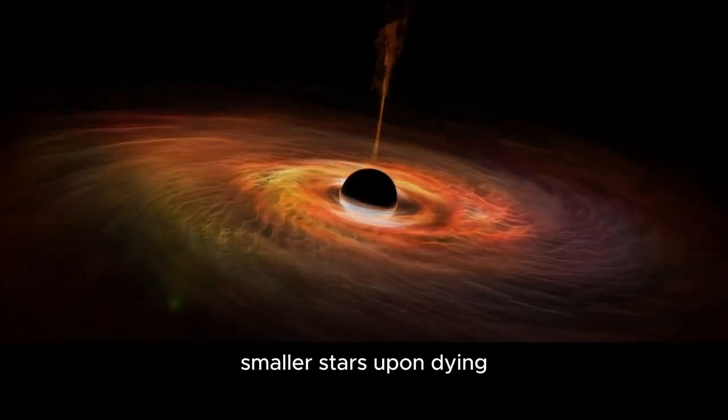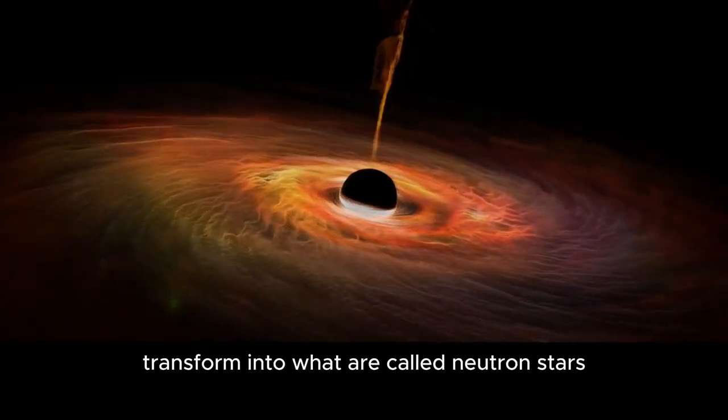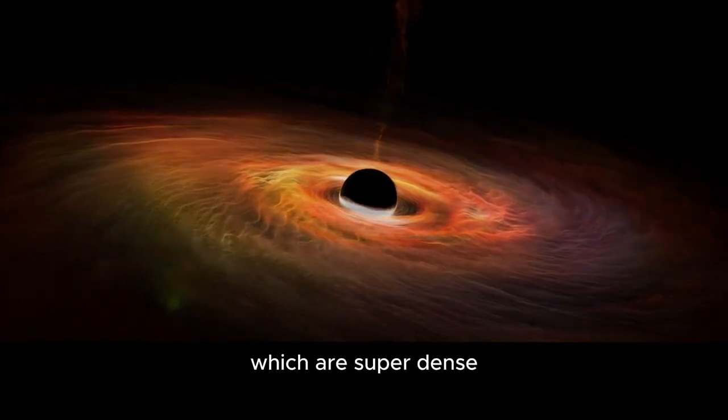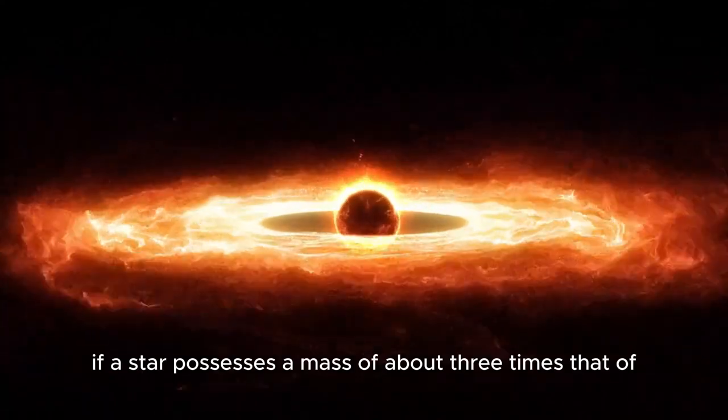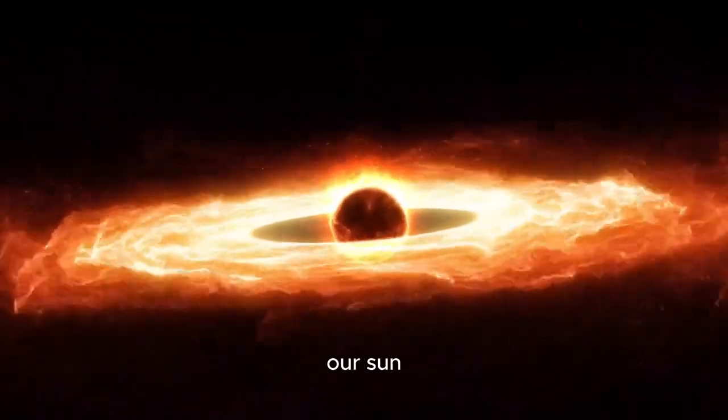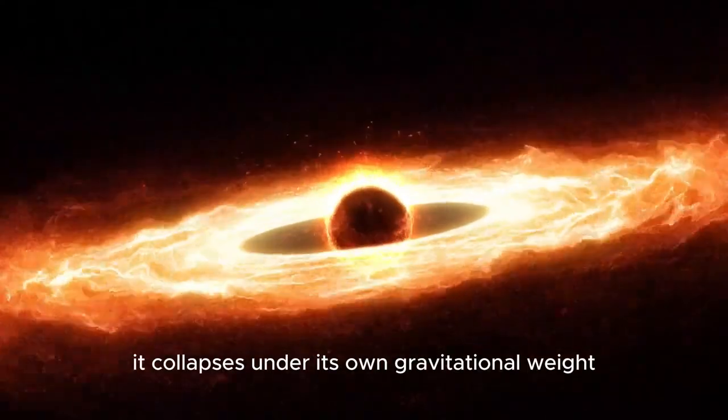Smaller stars, upon dying, transform into what are called neutron stars, which are super dense but not dense enough to ensnare light. However, if a star possesses a mass of about three times that of our sun, it collapses under its own gravitational weight, forming a black hole.